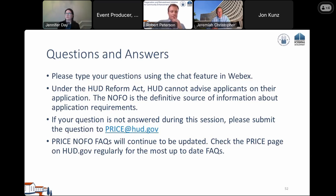Q: If a local government wishes to utilize a subrecipient, is this considered a partnership and is a binding agreement required for submission? A: Applicants who partner with manufactured housing communities or propose to implement a program assisting residents may implement a grant award by means of sub-awards to sub-recipients to carry out price program activities. Such applicants must provide evidence of collaboration between parties by attaching relevant and supporting documentation such as legally binding development or cooperation agreements.